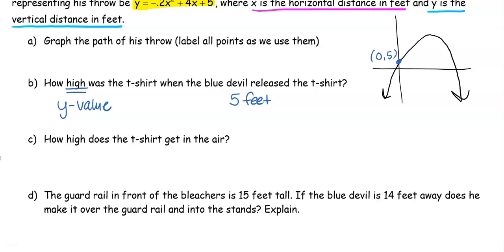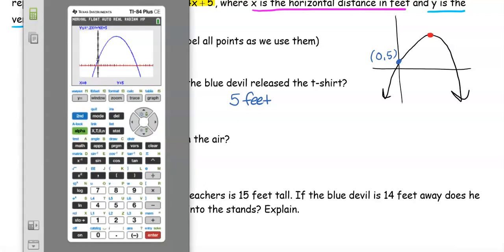Part C: How high does the t-shirt get in the air? When it asks how high, we're referencing the y value, and it's asking what is the highest point it reaches, which means we're looking at the maximum value. Go back to the calculator, 2nd Trace, number 4, which is the maximum. It walks you through. First it asks left bound - are you left of where you think the max is? Yep, so I hit enter.